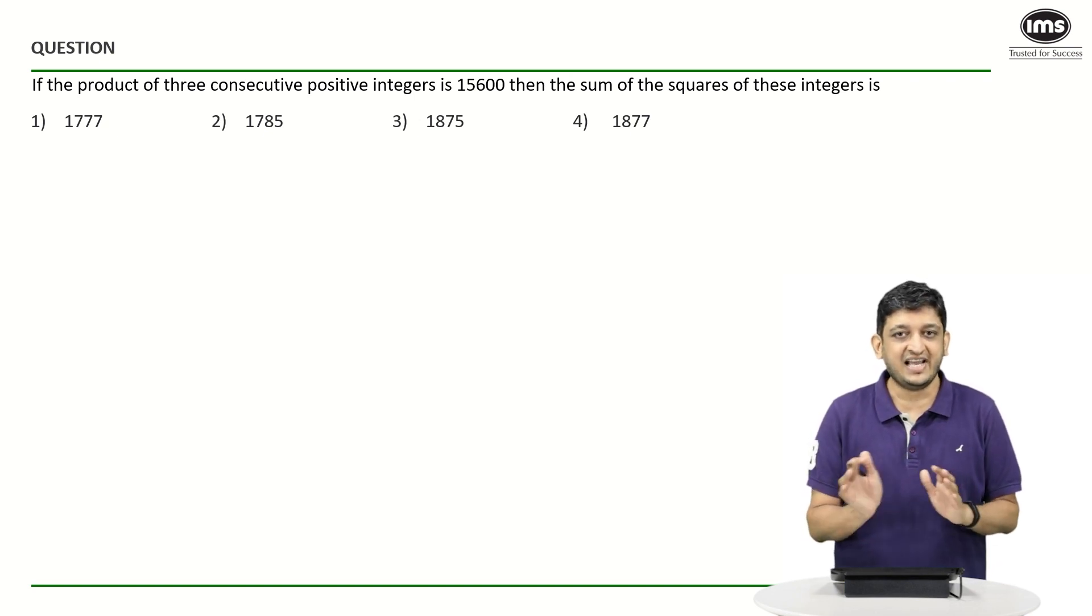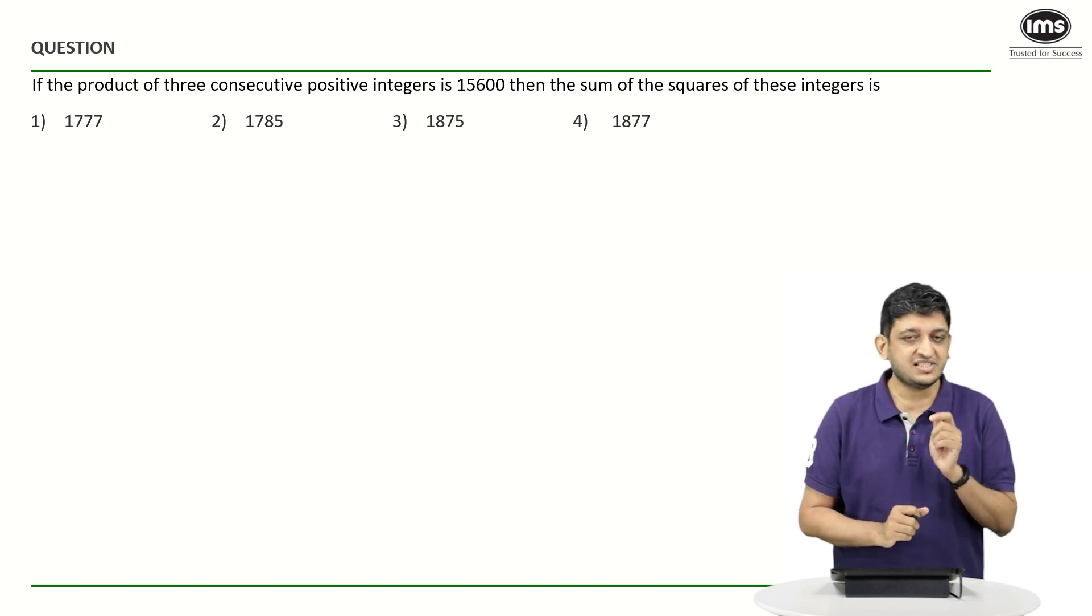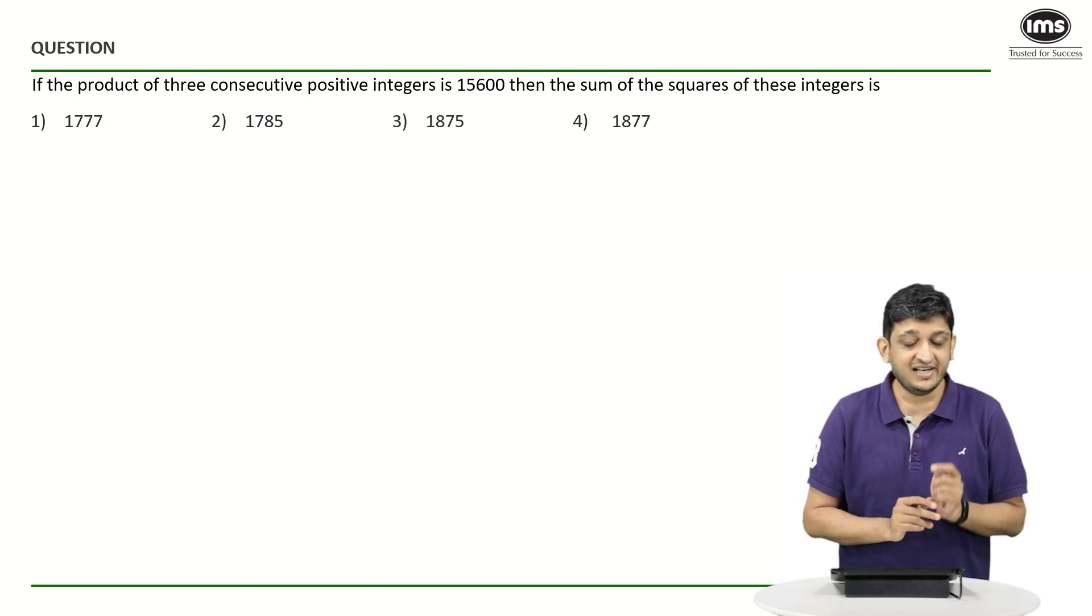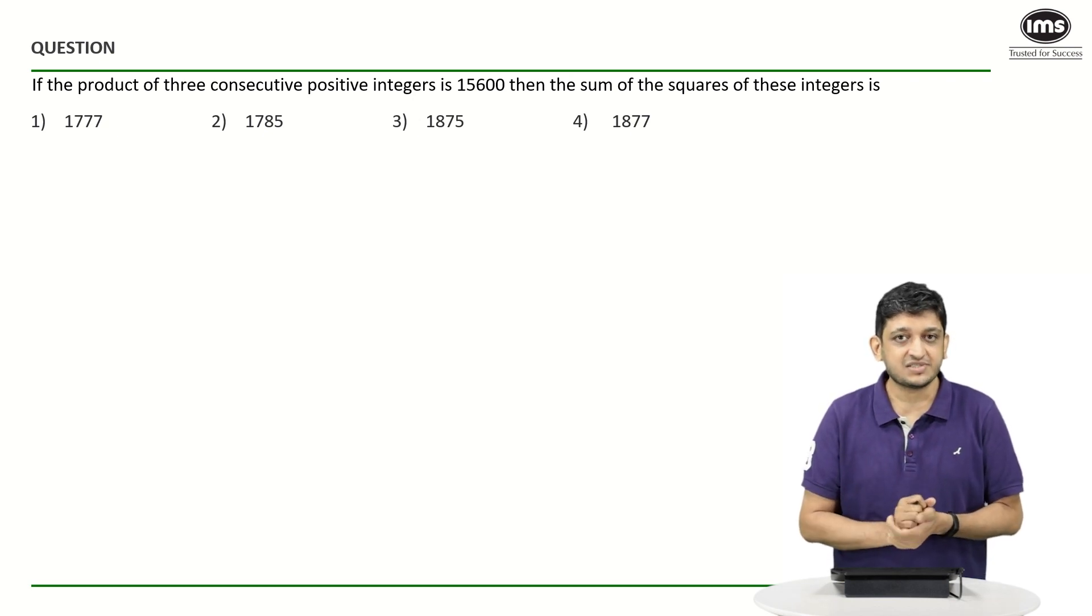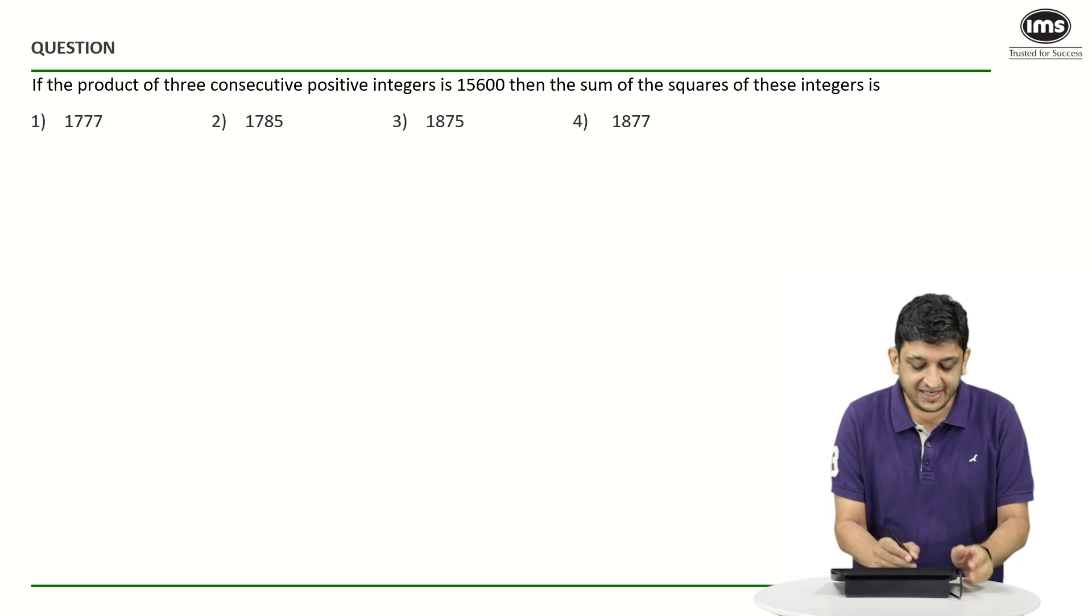When it comes to this particular question, if you have a good sense of numbers, you should be able to crack this question in the next step itself. Because what you have to understand is: whenever we are multiplying three consecutive integers, what happens in that case?